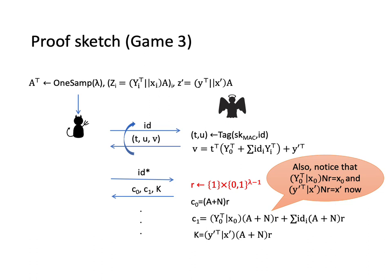Also notice that Y₀ᵀX₀ times NR is equal to X₀ and Y'ᵀX' times NR is equal to X' instead of 0 matrix now. This allows us to extract X₀ and X' from C₁ and K later. Next, we switch the distribution of Aᵀ back to 0-SAMP.